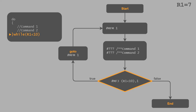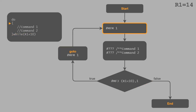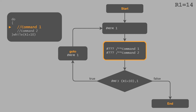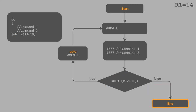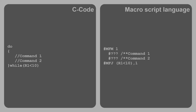We jump back to the beginning of the loop if the condition R1 is less than 10 is fulfilled. In our example this is true, and we jump back to marker with ID 1. Now we assume the register value R1 changes to 14. We work through all commands inside the loop and come back to the jump condition. This time it is no longer fulfilled because the register value is greater than 10, and we have reached the end of the loop. The structure of the do-while loop is identical to the for loop; the condition R1 less than 10 is equivalent to C code.